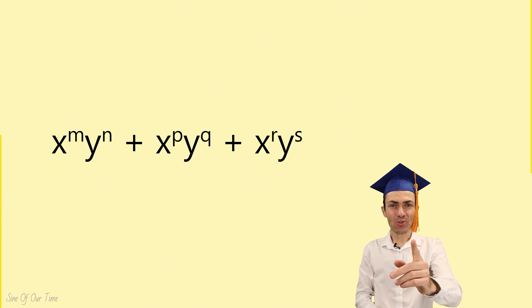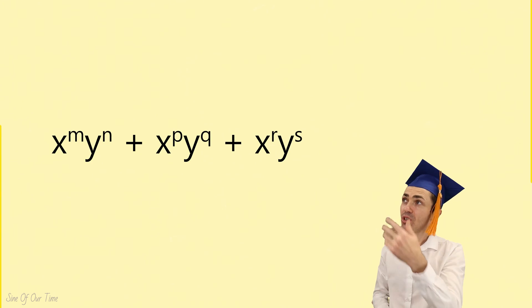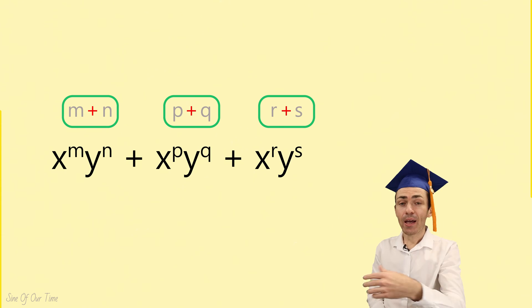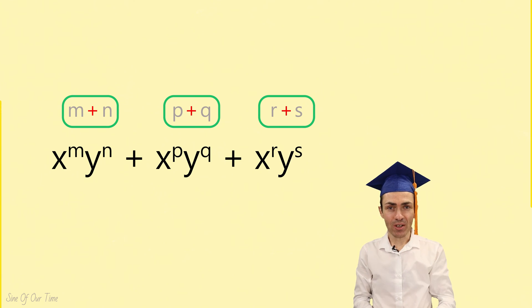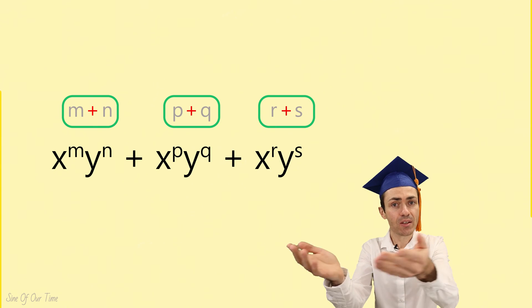In order to find the degree of a polynomial, we first need to find the degree of each of the terms in that polynomial. Whichever term has the highest degree will be the degree of that polynomial.